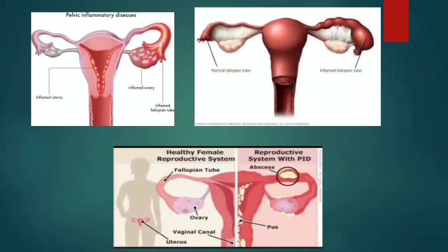In this image you can see there is inflammation of the ovaries, an inflamed uterus representing inflammation of the endometrium, and also inflammation of the fallopian tube. These are the clinical manifestations of pelvic inflammatory disease.